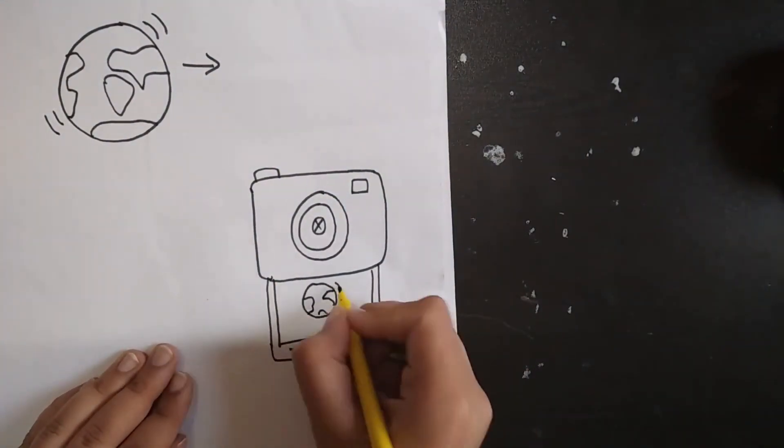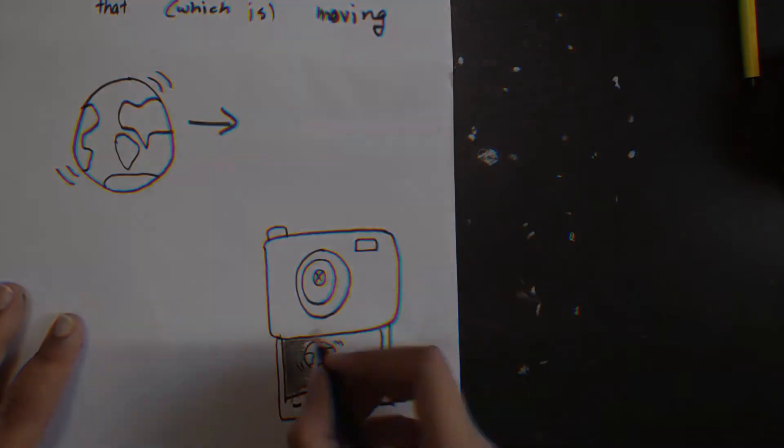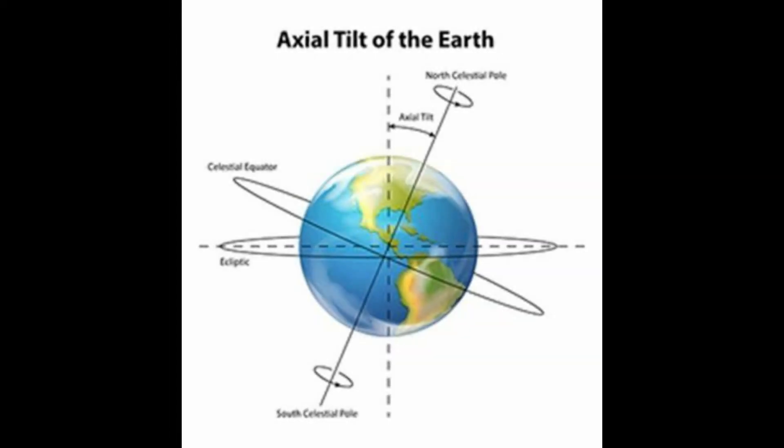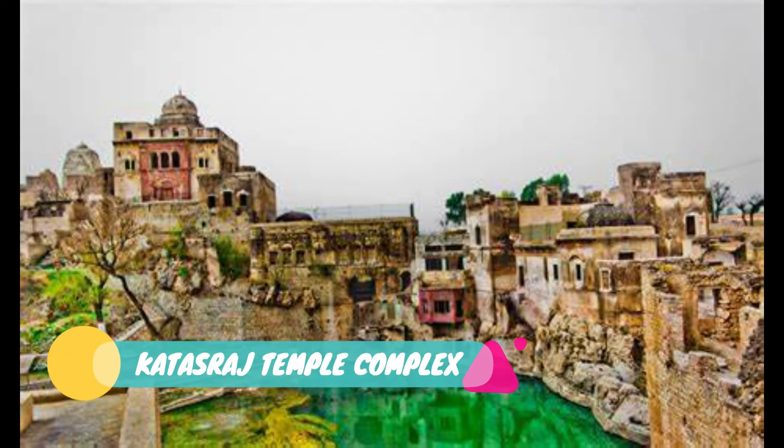And guess what? There's more. The Earth is tilted at an axis, right? And when you find the diameter of the Earth keeping the axis tilt in mind, it passes through Katasraj in current-day Pakistan. It was a university.